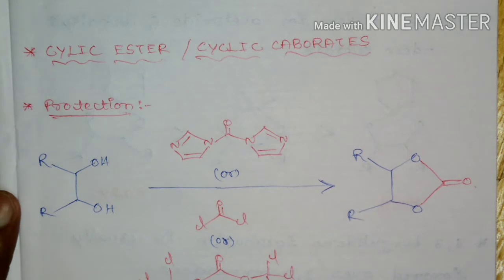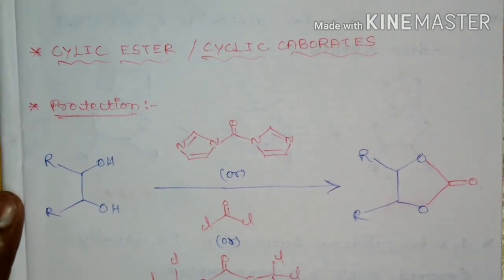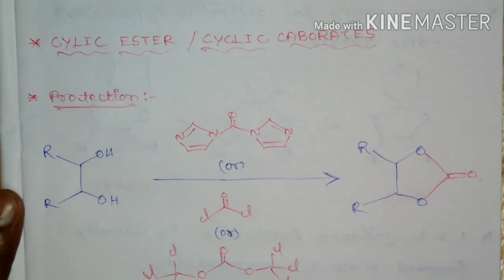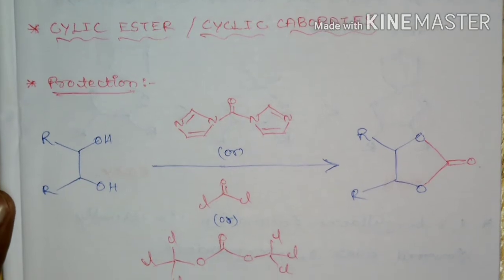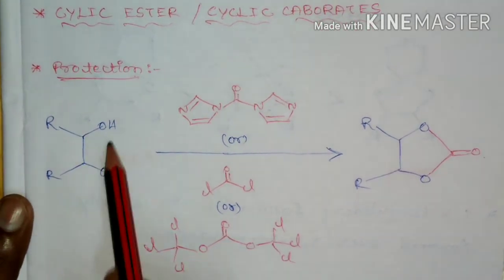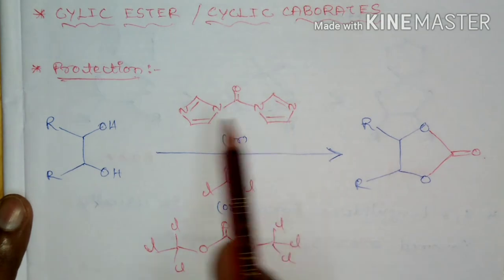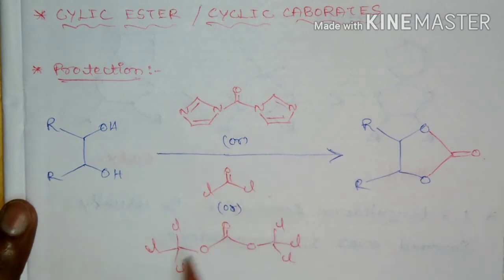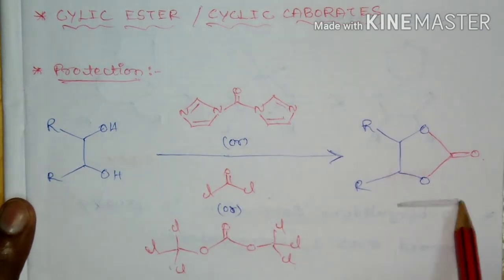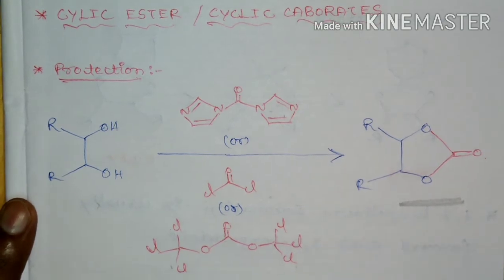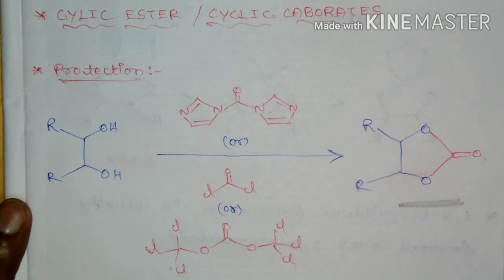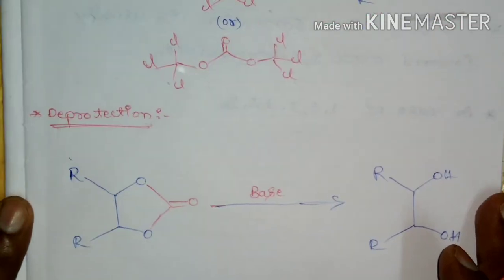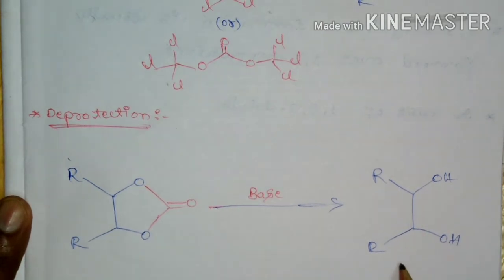Next, 1,2-diols can be protected as cyclic esters or cyclic carbonates. Treatment of 1,2-diol with CDI (carbonyl diimidazole), phosgene, or triphosgene leads to the formation of cyclic carbonates or cyclic esters. These cyclic carbonates or cyclic esters can be deprotected by treatment with a base.